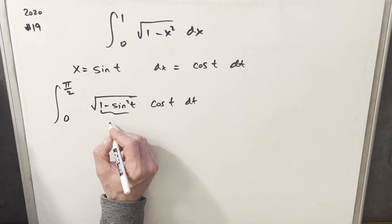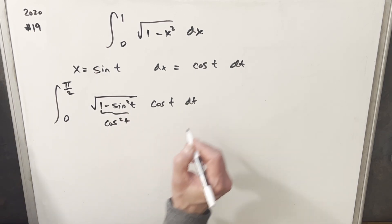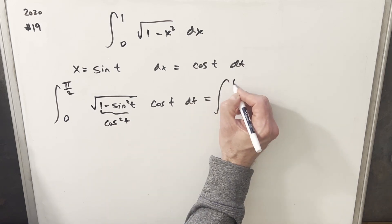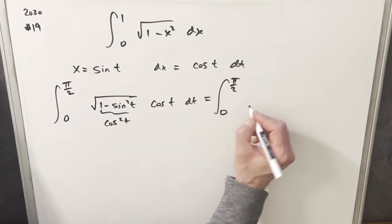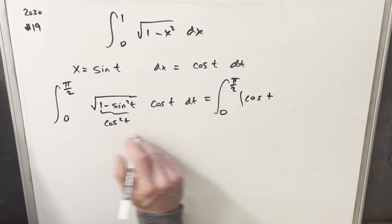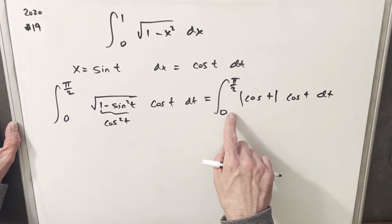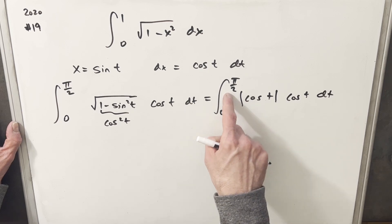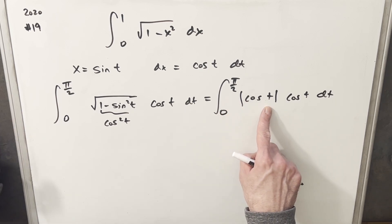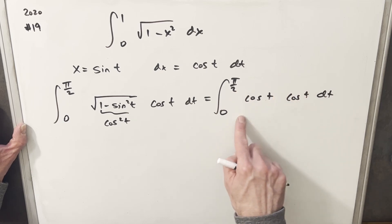Now, 1 minus sine squared t is just cosine squared t. So we'll take this square root, and we're going to have an absolute value sign at first on our cosine. I'm going to remove this absolute value because our bounds are just the first quadrant — in that quadrant, cosine is always going to be positive, and therefore we don't need it.